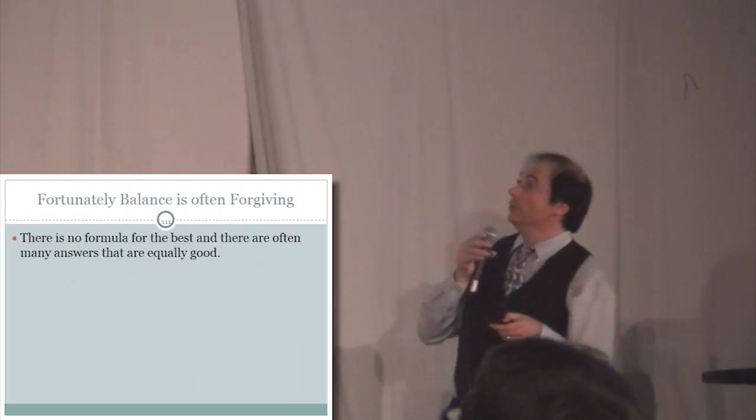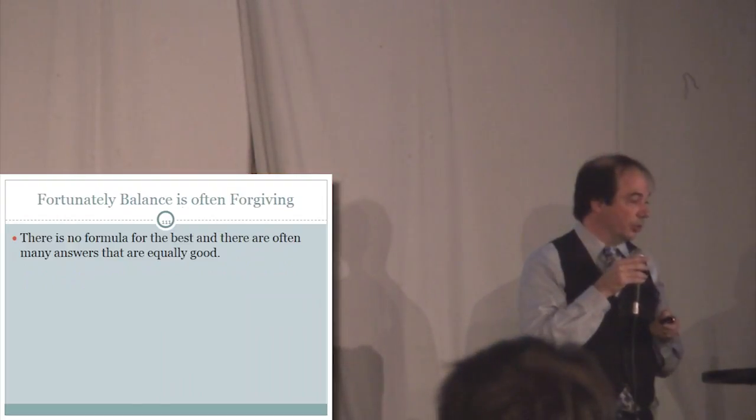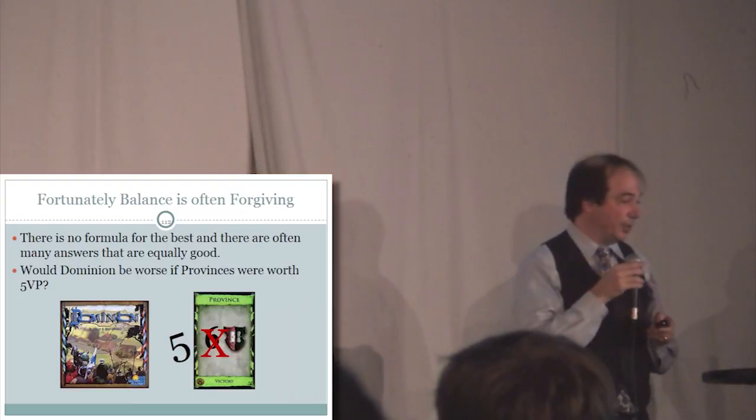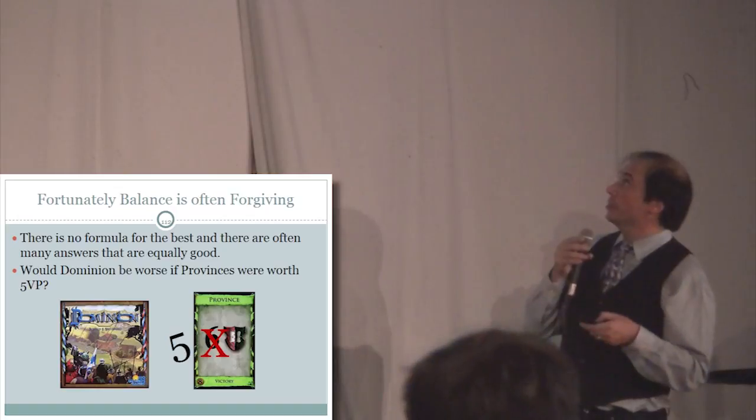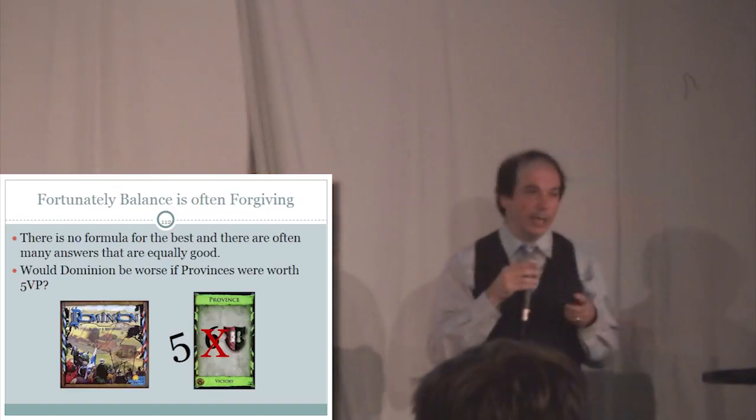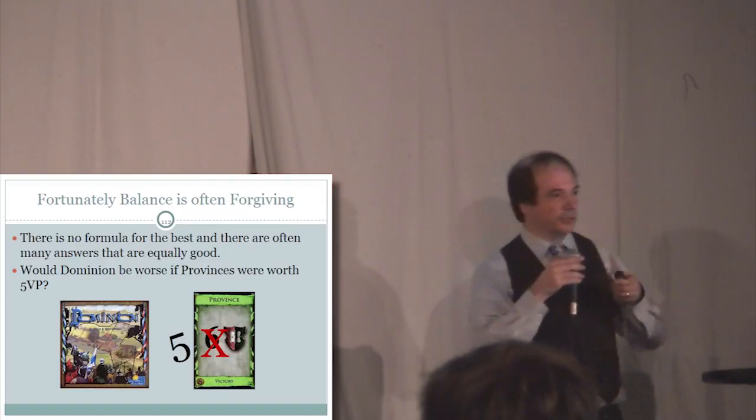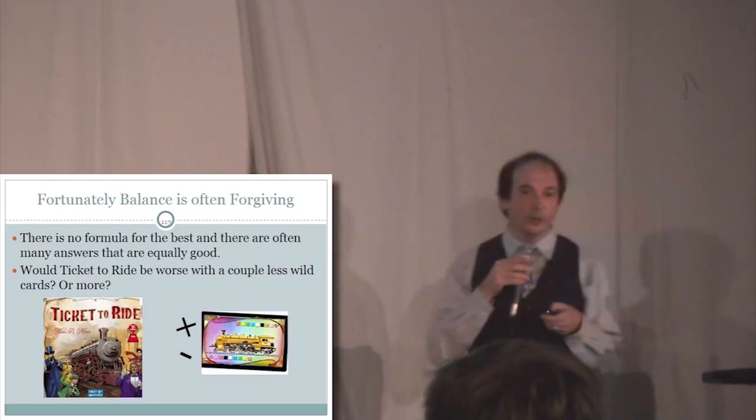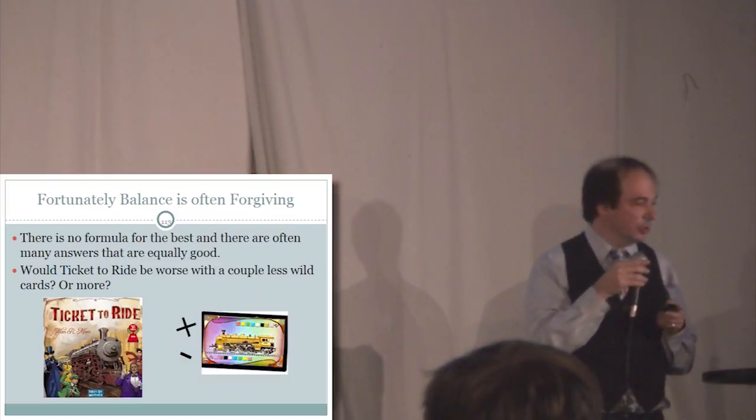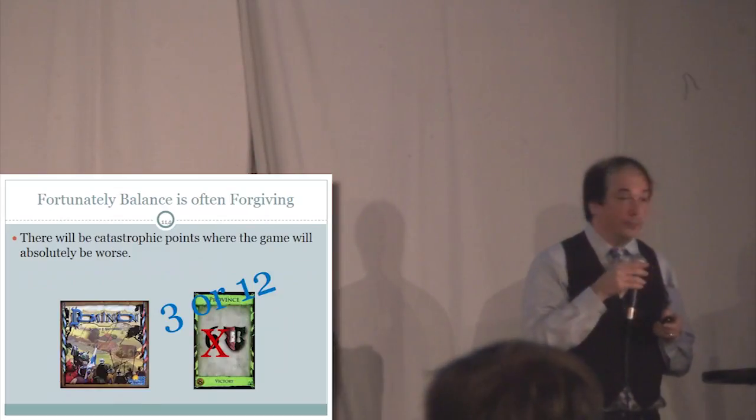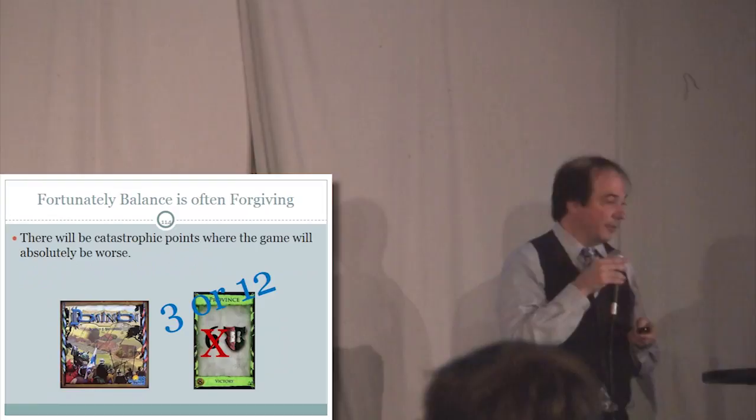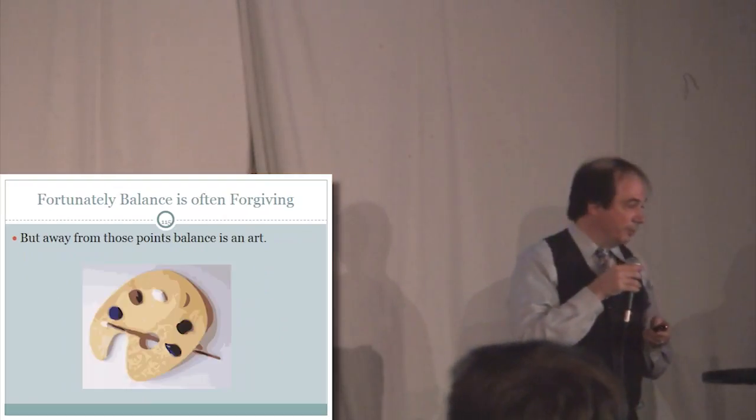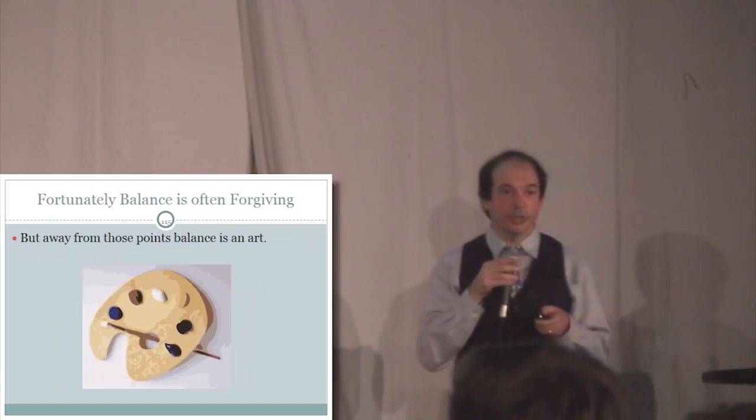While there is no formula, there's often many answers that are equally good. It's a matter of art for figuring out that number. For example, in Dominion, would the game be worse if your provinces cost five? I have played it with five. Personally, I don't think so. Maybe for some players it would be. In Ticket to Ride, should there be a few less wild cards or a few more? It's going to be maybe equally good for a few more or a few less. Now there are catastrophic areas. If you made your provinces cost three in Dominion, that would be pretty bad. But away from those catastrophic points, balance is really an art.